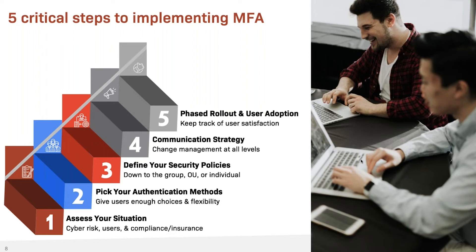Third step: define your security policies. Make sure your policies are specific to the group or even down to the individual. The CEO is often the hardest one to get to use multi-factor. Getting that individual their own policy and understanding what works for them is very important. Part of that policy is also configuring adaptive authentication — taking into consideration where they work, time and location, network, and IP — so you can give them flexibility if they're always in their home office or traveling.